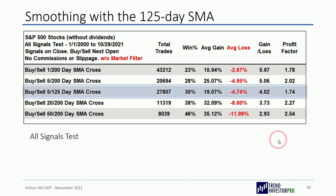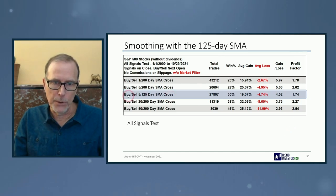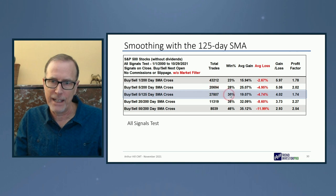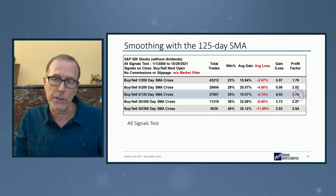Personally I don't like the 50/200 cross because it has a high drawdown and significant lag. The 22/200 cross seems to be a sweet spot and that's the one I'll focus on. I also tested a 5/125 cross — since 125 days is my sweet spot for indicators — but with that setup the win rate was only 30%, gain-loss ratio was 4, and profit factor was below 2. For S&P 500 stocks the 200-day moving average is the one you want to use.